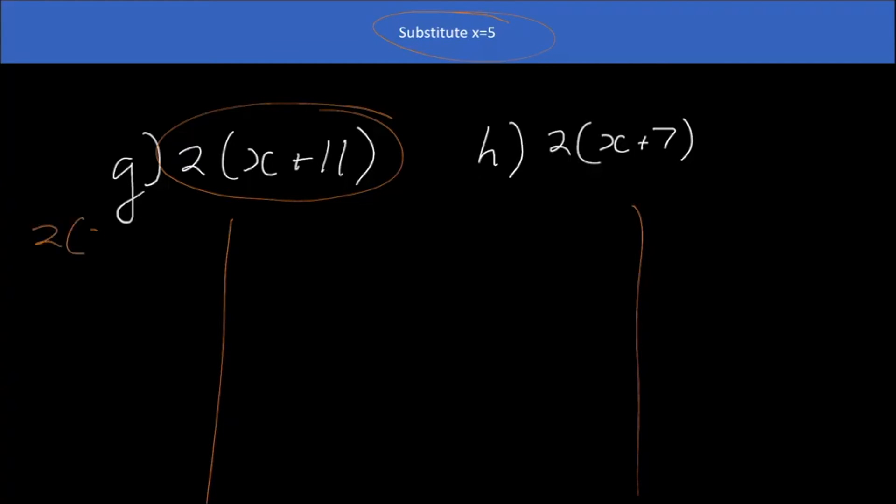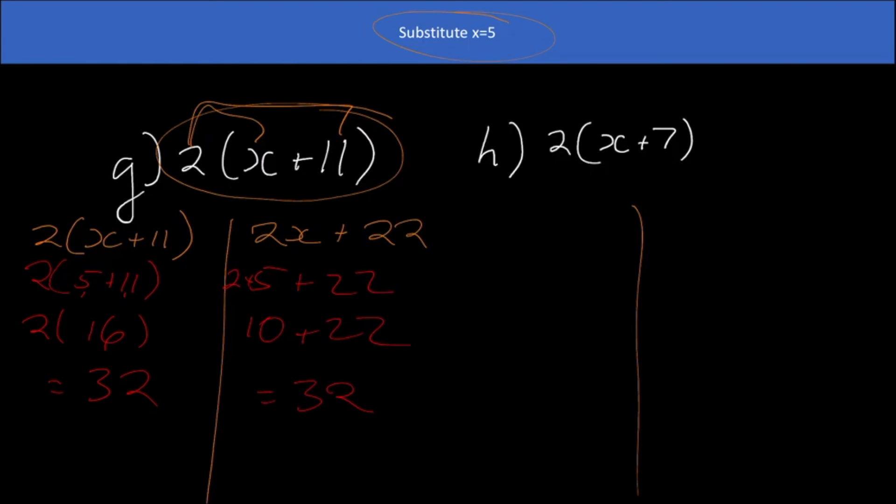Okay, so this is going to stay the same, and then this one is going to be 2x plus 22. And now I'm going to sub in five for x, so I have two, there's five plus eleven. And this is going to be, okay, it's inside the bracket, so if I'm following order of operations, this is going to be 55, or sorry, not 55, this is going to be 16, and then 16 times 2 is going to be equal to 32.